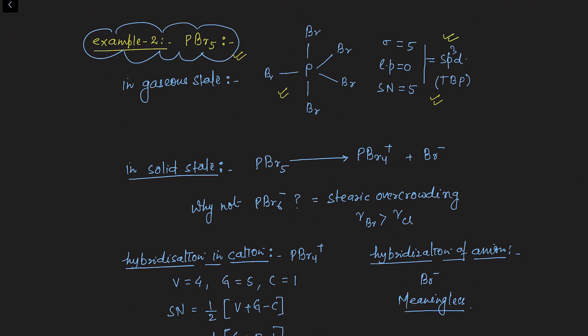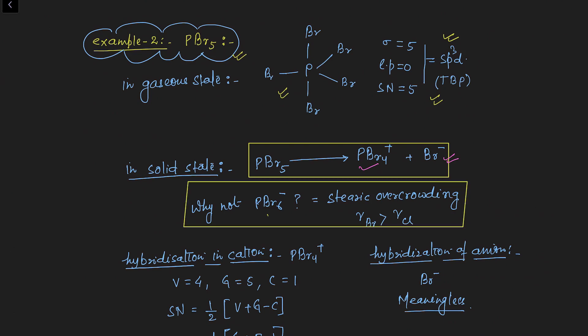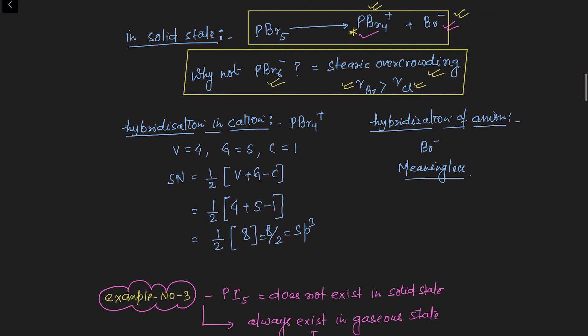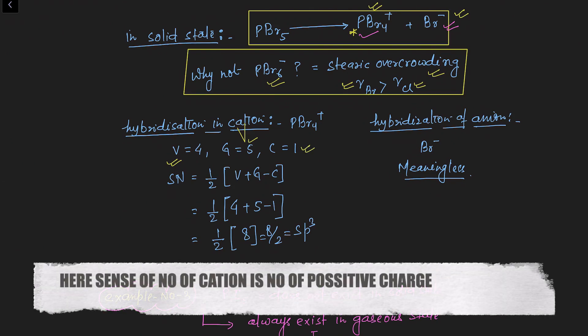Example two: PBr5 (phosphorus pentabromide). In gaseous state its geometry is the same as PCl5 — trigonal bipyramidal. But in solid state it ionizes into PBr4+ and Br−. PBr6− does not exist due to steric overcrowding, because bromine is larger than chlorine. For PBr4+: monovalent atoms = 4, valence electrons of phosphorus = 5, cation charge = 1, giving sp3 hybridization.